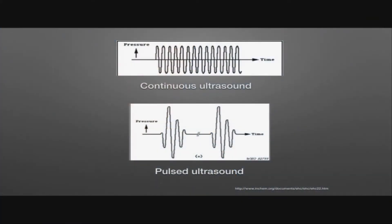Continuous ultrasound, which goes on all the time, is what we use for things like continuous wave Doppler. But for things like B-mode imaging or M-mode imaging, we're going to be using pulses of ultrasound. These pulses are short collections of ultrasound waves which are sent out, and the overall time of this pulsed ultrasound is known as the pulse duration.